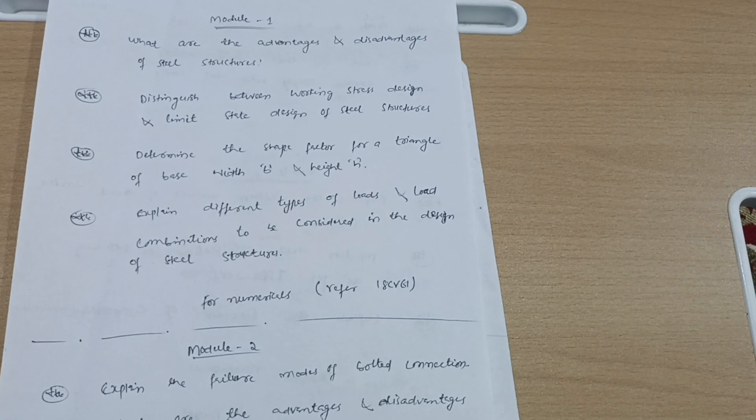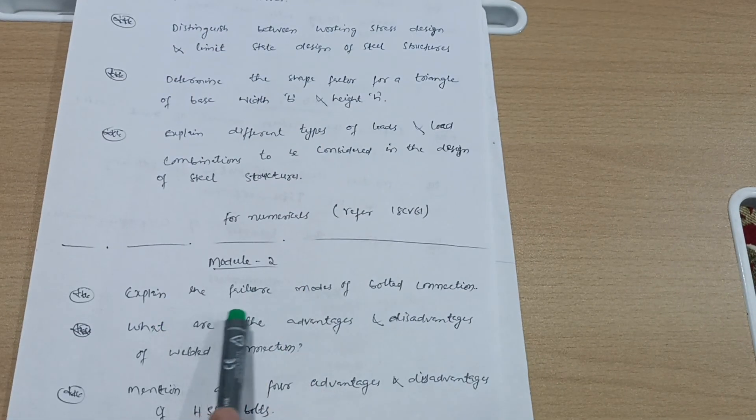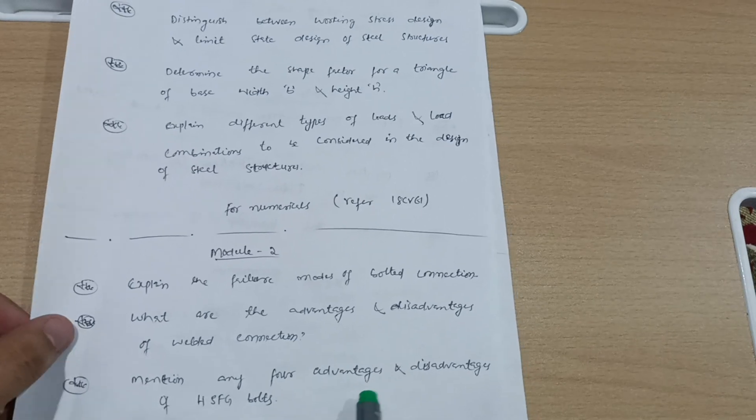Next is Module 2: Explain the failure modes of bolted connection. What are the advantages and disadvantages of welded connection? Mention any four advantages and disadvantages of HSFG bolts.